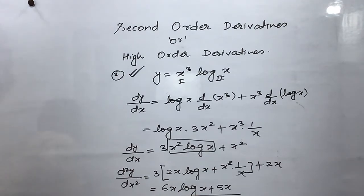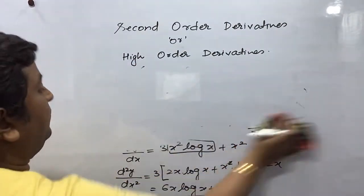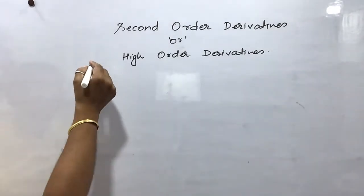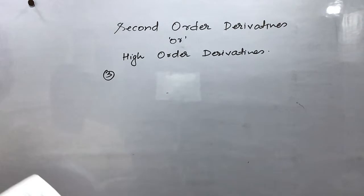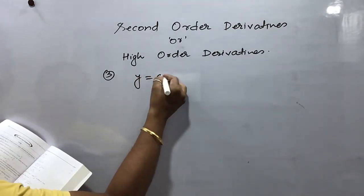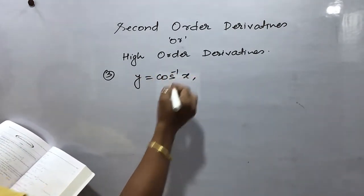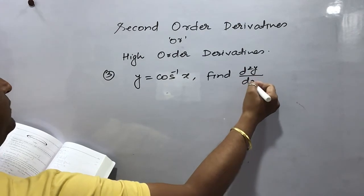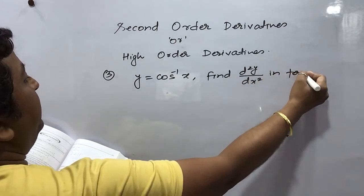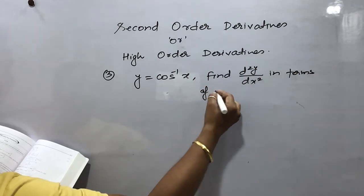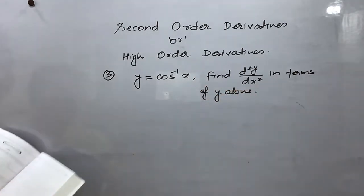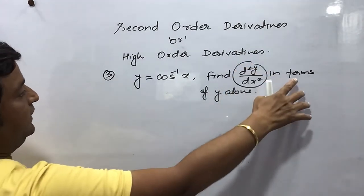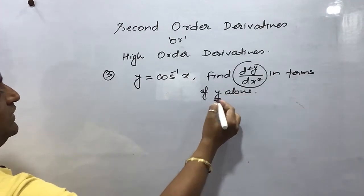Now I am going to explain another very important and good question. This one requires a concept from ITF (Inverse Trigonometric Functions). Question number 3 — this is an NCERT question: y = cos⁻¹ x. You have to find d²y/dx² in terms of y alone. The question is saying: find the double derivative, but the answer should come in terms of y only.